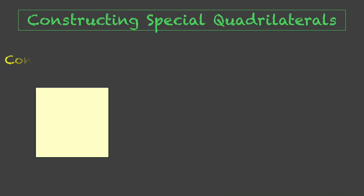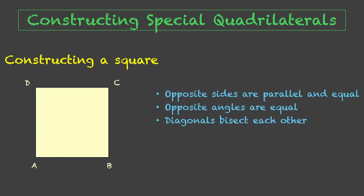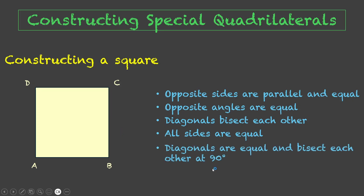Let us also try to construct a square. Let us recall the properties of a square. A square is a parallelogram, so it has the properties: opposite sides parallel and equal, opposite angles equal, and diagonals bisect each other. Apart from these, a square has all sides equal — AB = BC = CD = DA — and the diagonals of a square are equal and bisect each other at 90 degrees. This is what differentiates it from the rhombus: its diagonals are equal.